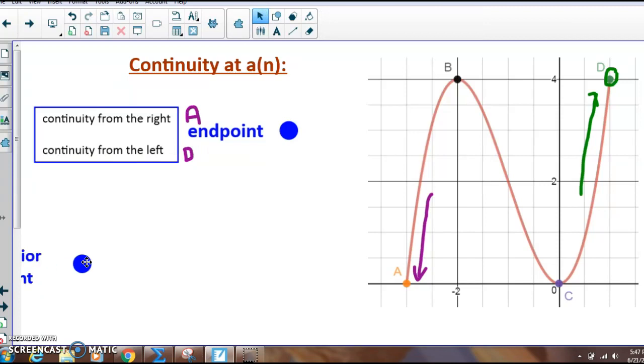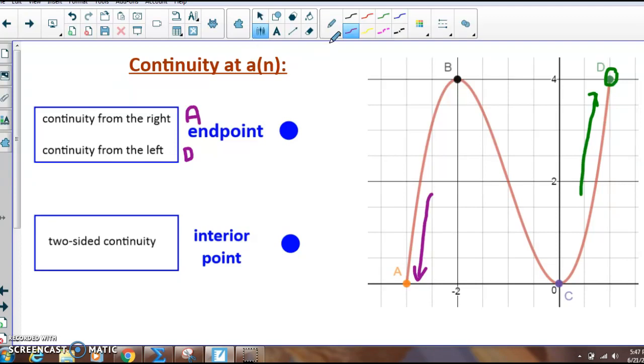The other type of continuity that we have would be continuity at an interior point. We've investigated these in previous math classes before. In order for a function to have continuity at an interior point, it actually has to have two-sided continuity. That means that it has to have the limit from the left side and the limit from the right side both exist and both be the same. So point B would be continuity at an interior point and the same thing with point C down here. Coming from the left, coming from the right, you would see that point C is continuous, it is a continuous point.